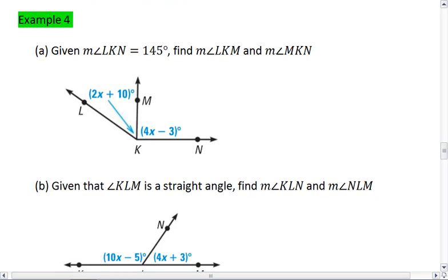Given the diagram below and the fact that angle LKN, this angle here, the big one, is 145 degrees. We want to find the measure of angle LKM, the left angle, and the measure of angle MKN, the right angle. Take a moment, try to solve this problem on your own first, and then resume the video when you're ready to check your solution.